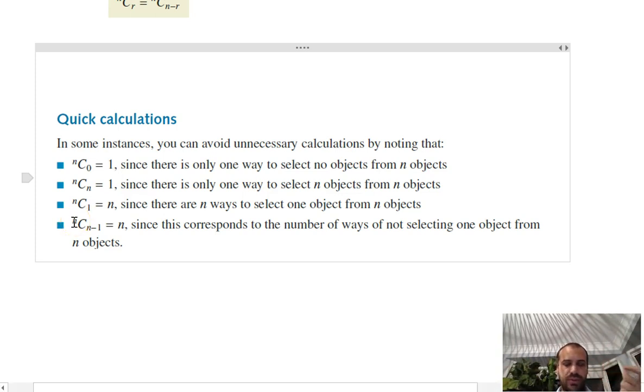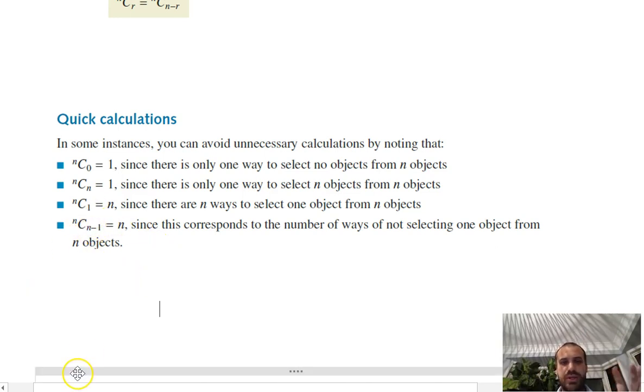And then, similar to what we just spoke about, nC n minus one. There's 100 people and you want to choose 99. That's the same as selecting one person or just pushing someone away and saying, I'll have you 99. There's 100 ways to choose 99 people out of 100 people. There's some quick ones. You won't need your calculator if you run into any of those.